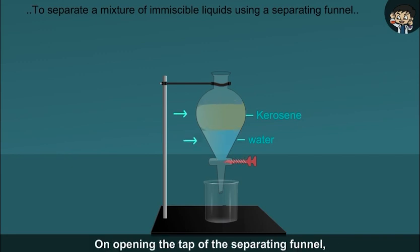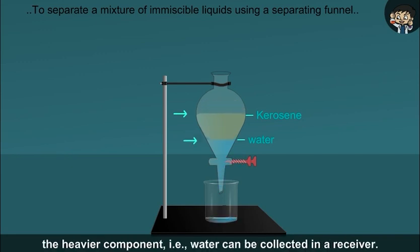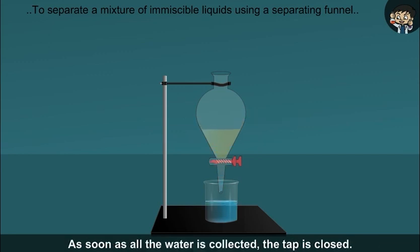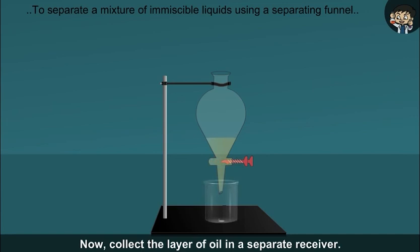On opening the tap of the separating funnel, the heavier component, i.e., water, can be collected in a receiver. As soon as all the water is collected, the tap is closed. Now collect the layer of kerosene in a separate receiver.